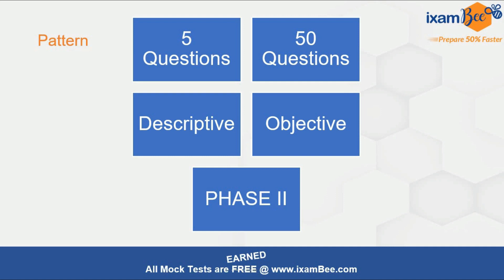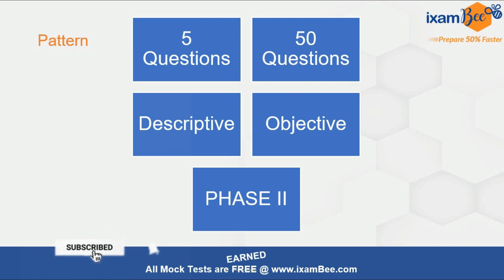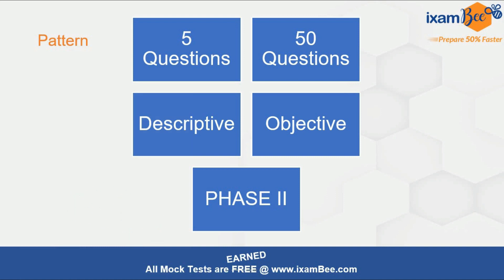The objective section will be MCQ-type where only one answer is correct per question — not multiple answers. It will consist of 50 marks allocated across 30 questions: 10 questions of one mark each and 20 questions of two marks each. We will discuss the objective part in a separate video.